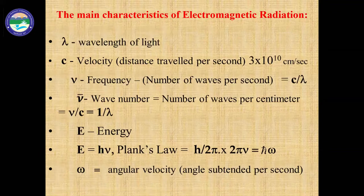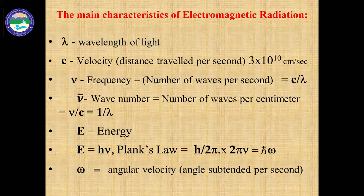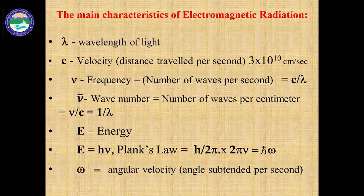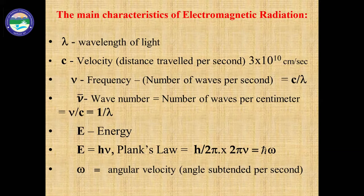What are the parameters we use to deal with spectroscopy? The first parameter is wavelength of light. The second is velocity of light — a fixed quantity in vacuum at 3×10⁸ meters per second. The third quantity is frequency — the number of waves per second. The fourth is wave number, nu-bar, which is 1/λ. We also deal with energy using Planck's law: E = hν, or sometimes described as ℏω where ω is the angular velocity.